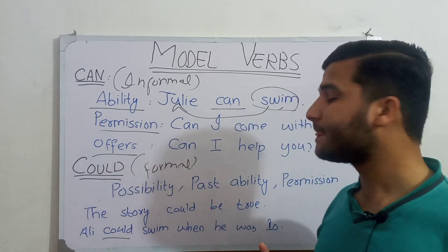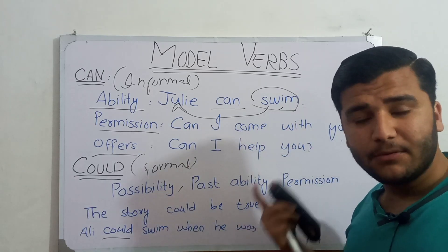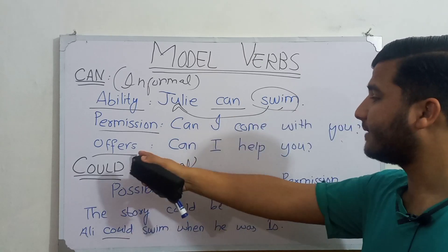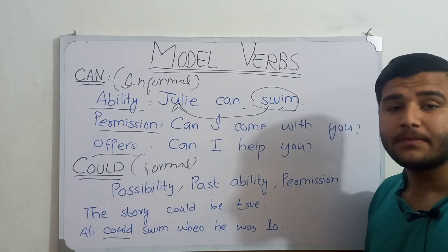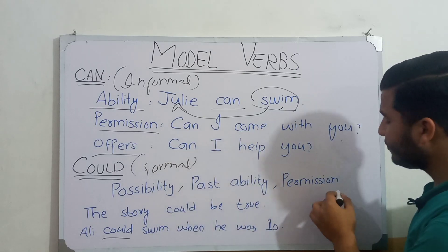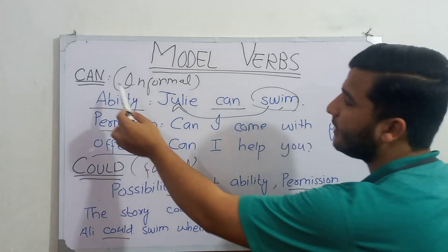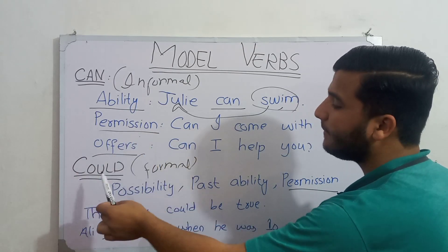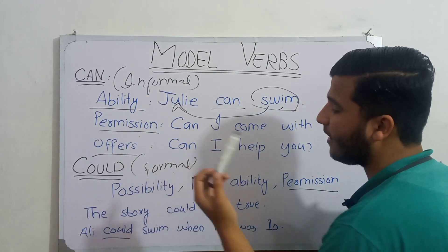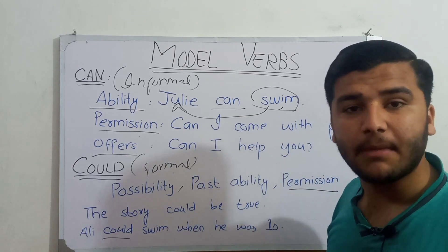The third function of 'could' is permission. For example, 'Could I take your pencil?' We also use 'could' for permission, just as 'can' is used for permission. The main difference is that 'can' is informal while 'could' is formal. In this way you can use either 'can' or 'could' depending on the level of formality required.